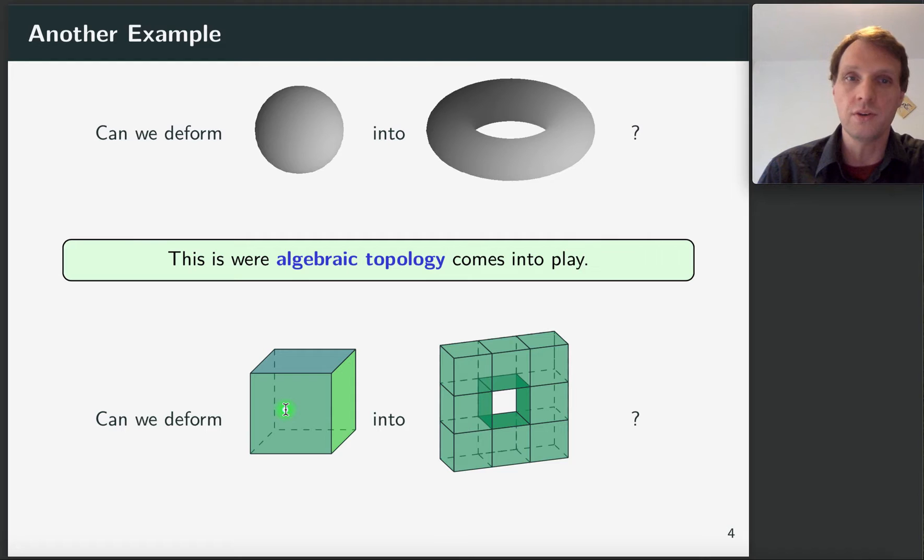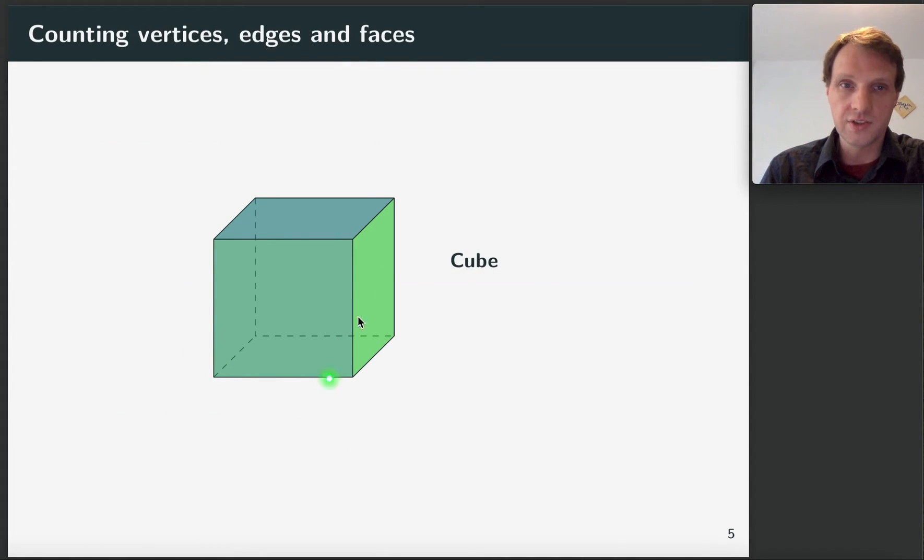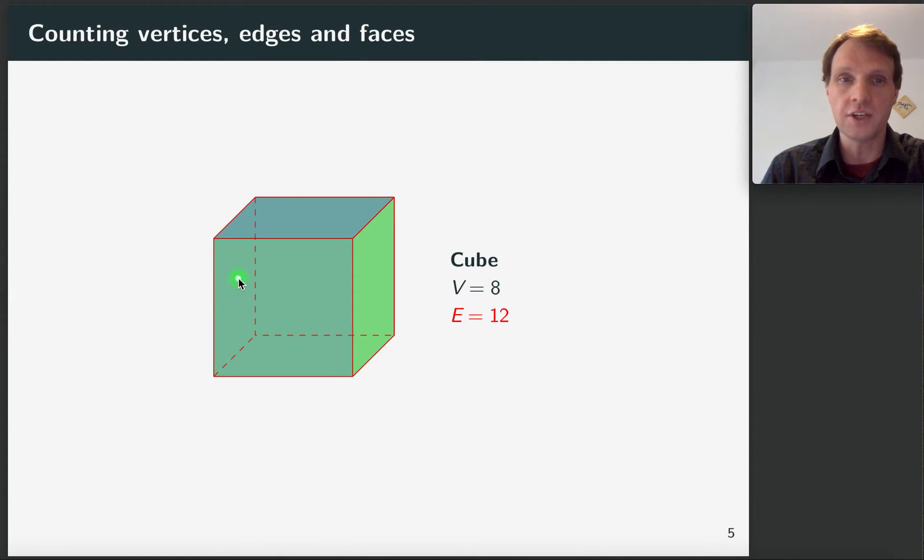Let's count the number of vertices, edges and faces. Here's the cube again. The cube has eight vertices, so four at the bottom and four at the top. And it also has 12 edges shown in red here. So you have four that make up the top, four that make up the bottom and four in the middle.